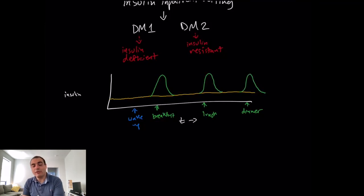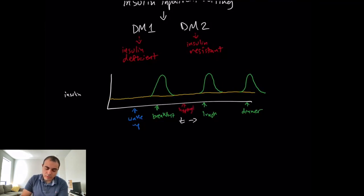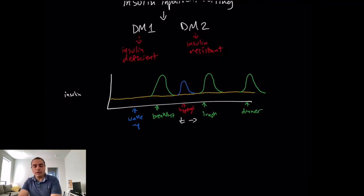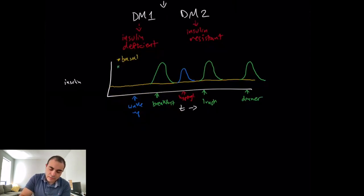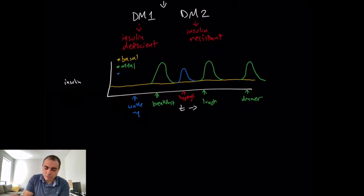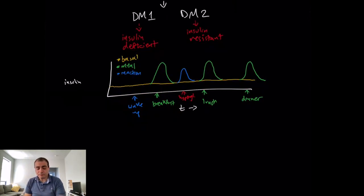If at any time throughout the day you take a snack or get a hyperglycemic episode, you get another spike of insulin. The yellow line is basal insulin, the green one is meal-associated insulin, and the blue one is reactionary or compensatory insulin. If you understand this basic principle, inpatient insulin management will be very simple.